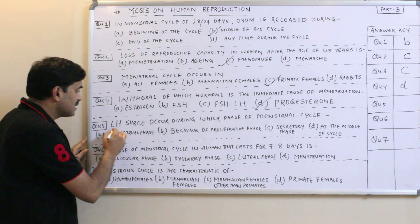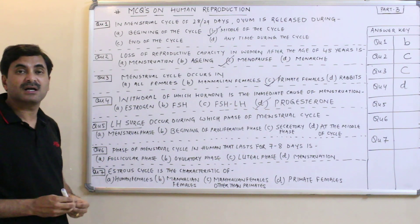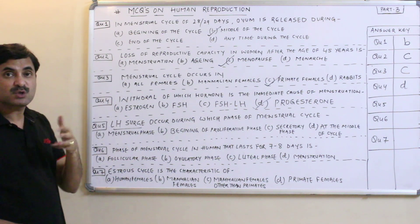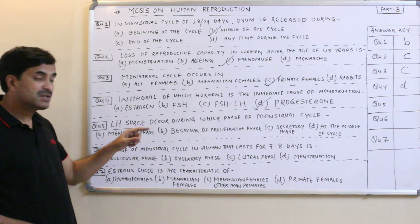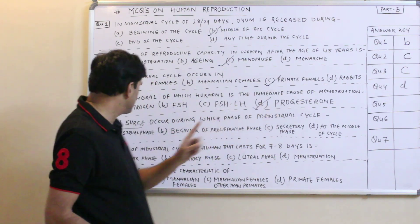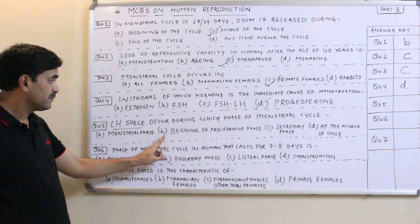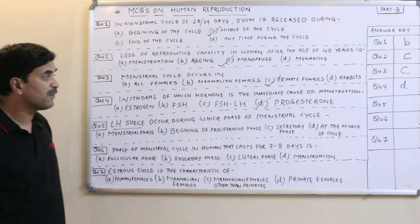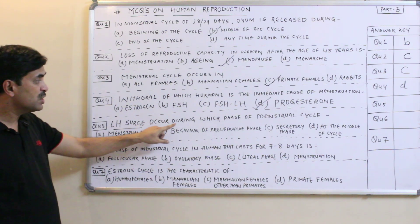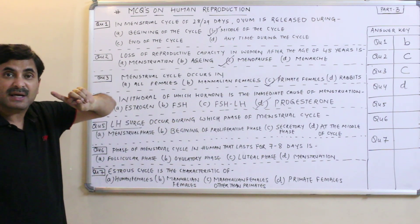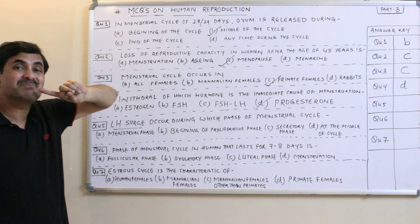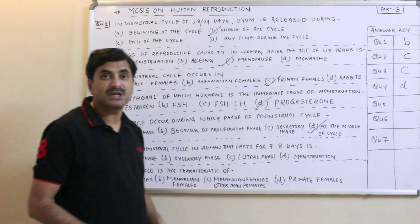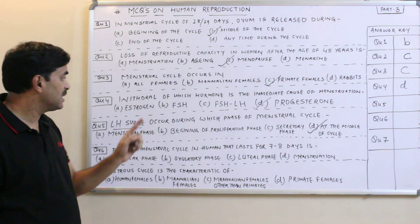Question number five: LH surge — meaning when the release of luteinizing hormone is at its peak — occurs during which phase of the menstrual cycle? The options are menstrual phase, beginning of proliferative phase, secretory phase, or middle of the cycle. LH surge is responsible for ovulation, and ovulation occurs on the 14th day, the middle of the menstrual cycle. So the answer is D — at the middle of the cycle.